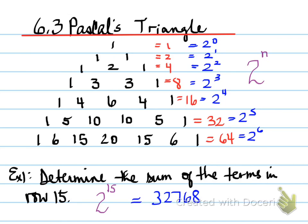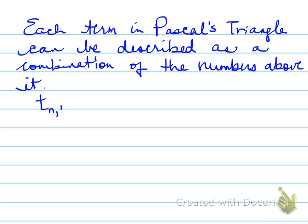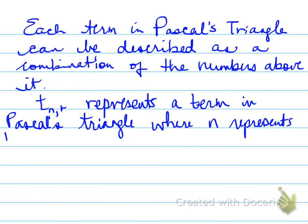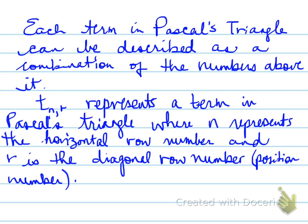Alright, so this is Pascal's triangle, and we can use Pascal's triangle in another part. Each term in Pascal's triangle can be described as a combination of the numbers above it. So T_NR represents a term in Pascal's triangle, where N represents the horizontal row number, and R is the diagonal row number, known as the position number. In other words, the position that it's in.